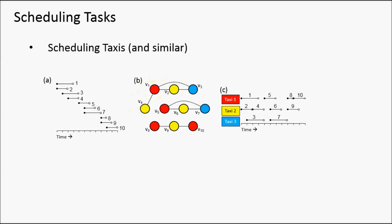Once we've colored this graph, the red vertices will correspond to the first taxi, the yellow to the second taxi, and the blue to the third taxi. We've managed to schedule all these journeys using three taxis. A minimum number of colors corresponds to a minimum number of taxis.